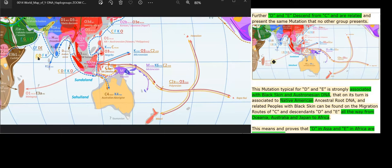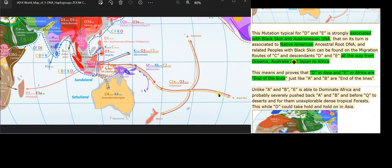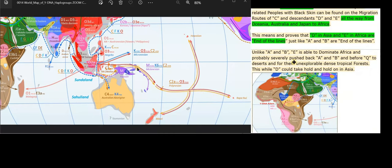Related peoples with black skin can be found on the migration routes of C and descendants D and E all the way from Oceania, Australia and Japan to Africa.